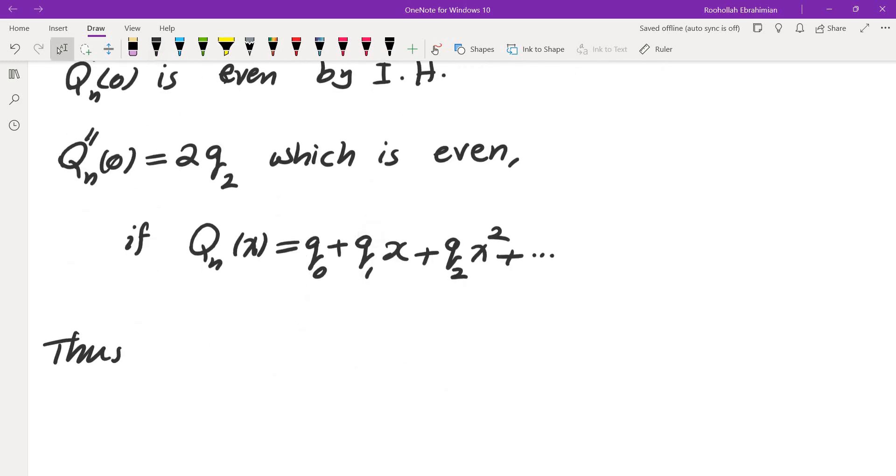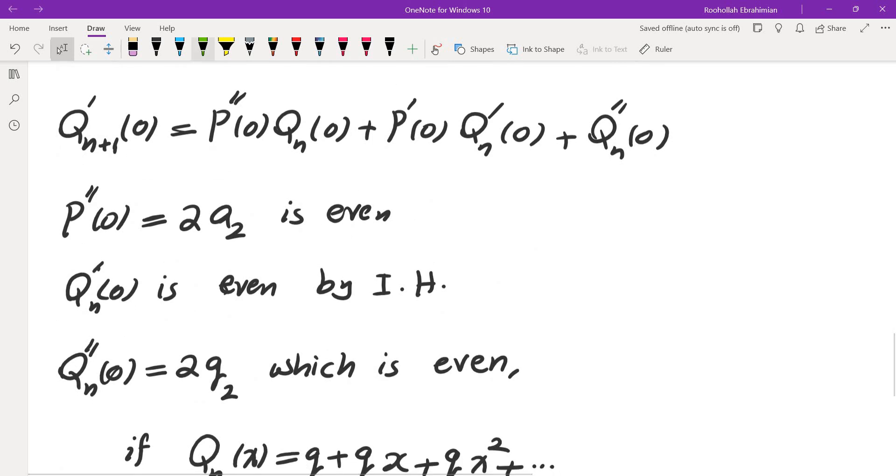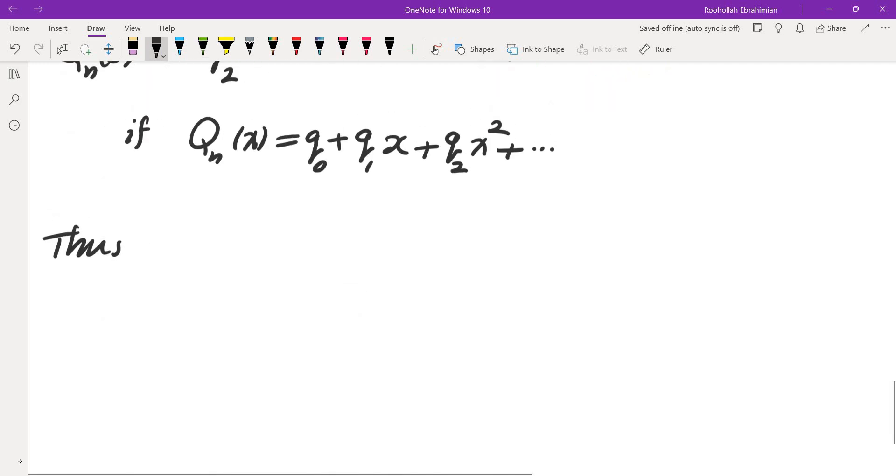So every term is even: this is even, this is even, and this is even. Thus Q'ₙ₊₁(0) is even. Therefore we proved what we wanted.